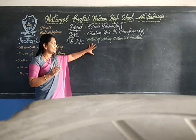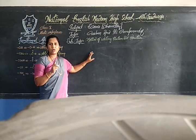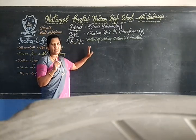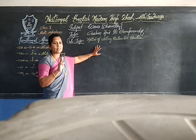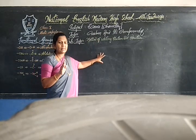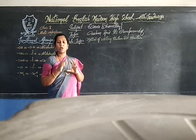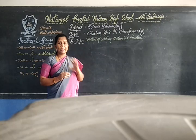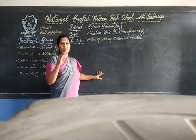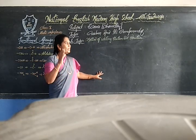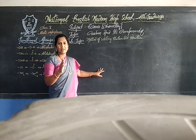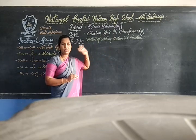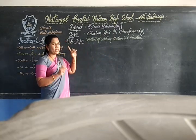Now let us see how to write the functional group basic structure, skeletal structure, and electron dot structure, because the electron dot structure is very important in examinations. You might get confused about how to write it, but once you grasp it, it is very easy. The only thing is you have to follow certain rules and regulations. If you follow those, it is definitely very easy. Let us take an example — butane.